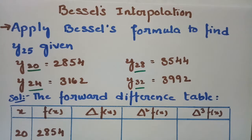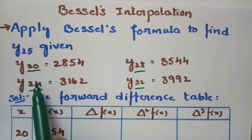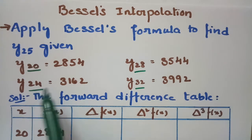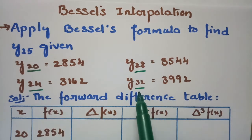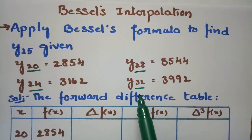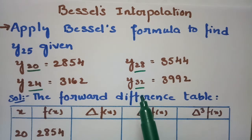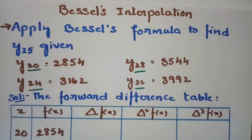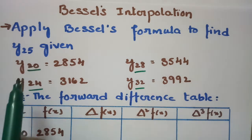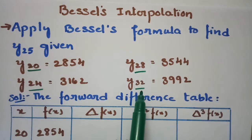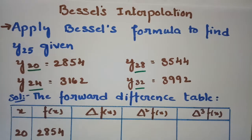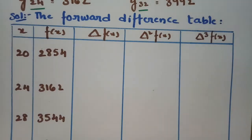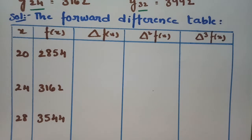Today's video I am going to apply Bessel's formula to find y(25), given that y(20), y(24), y(28), and y(32) values are given. Before using Bessel's formula, we have to frame the forward difference table. So 20, 24, 28, and 32 are the x values and these are the corresponding y values.